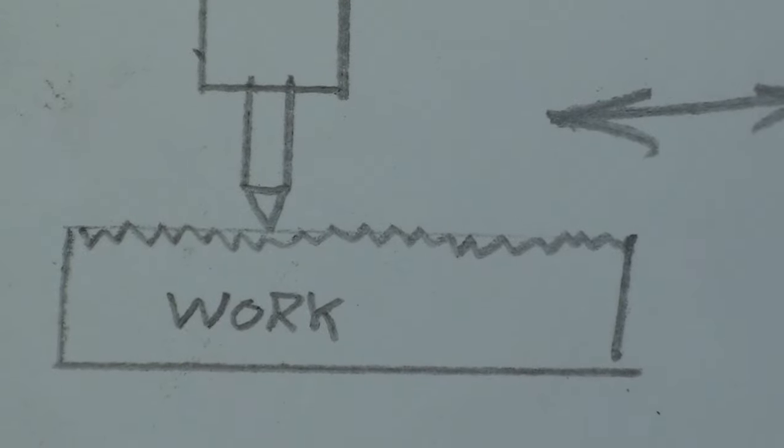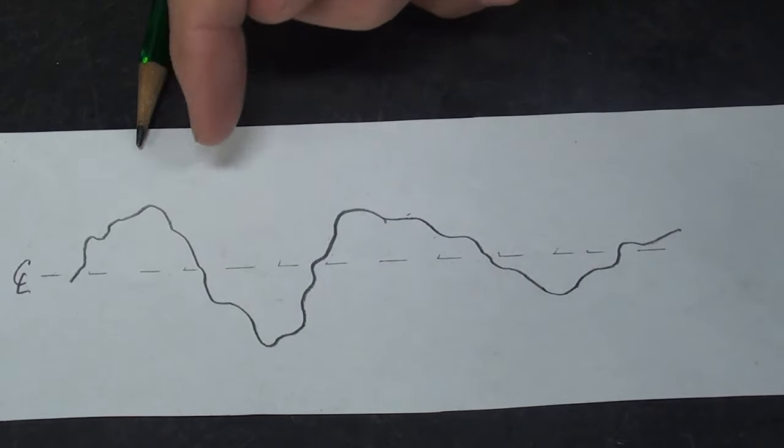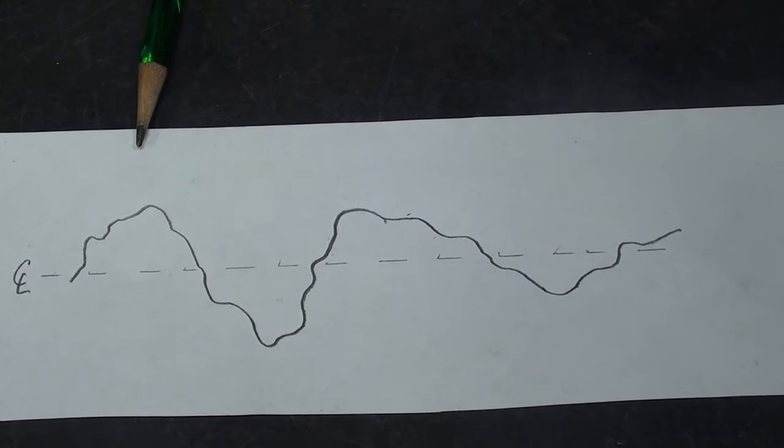No matter how smooth your work may seem after machining it, it really isn't that smooth. This is what it's going to look like if you can magnify it greatly enough. This is the diamond or the stylus that is traveling across a half inch and then taking an average reading.